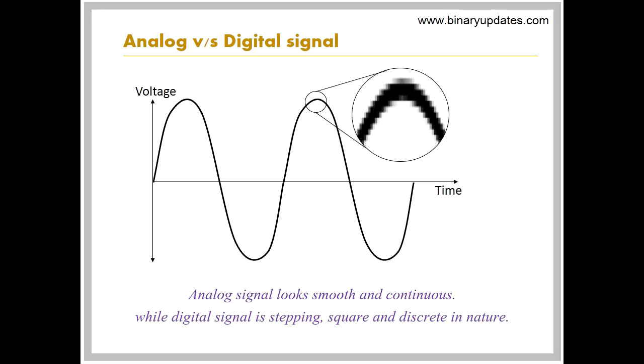Thus, analog signal looks smooth and continuous, while digital signal is stepping, square and discrete in nature.